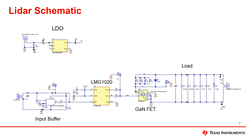This slide shows the schematic from TIDA-01573, which shows a layout for LiDAR. The diagram shows a laser diode on the top left, the driver, FET, and load. One key piece from this schematic that I want to highlight is the input buffer, which is shown by the red box. The purpose of this input buffer is to create nanosecond pulse widths.